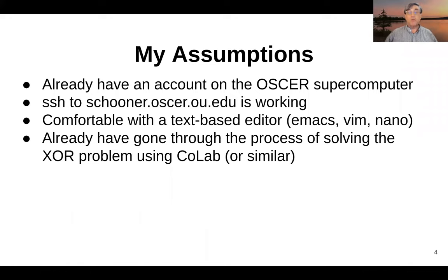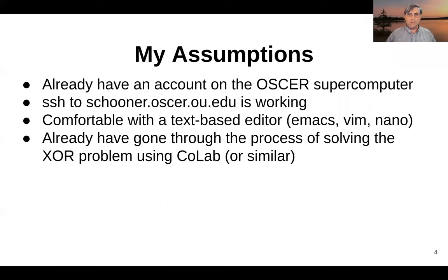What I'm assuming about you at this point in time is that you already have an account on the OSCAR supercomputer, that you're able to SSH into the supercomputer — the address for that is schooner.oscar.ou.edu. I'm also assuming that you have some experience and you're comfortable with using some sort of text-based editor. My favorite is Emacs, but Vim is also available and Nano is available as well. And the final thing I'm assuming is that you've already gone through the process of solving the XOR problem in the last tutorial using Colab or some other similar environment, so you already know the essence of what we did there.